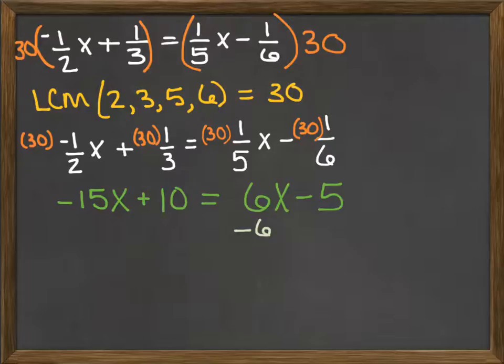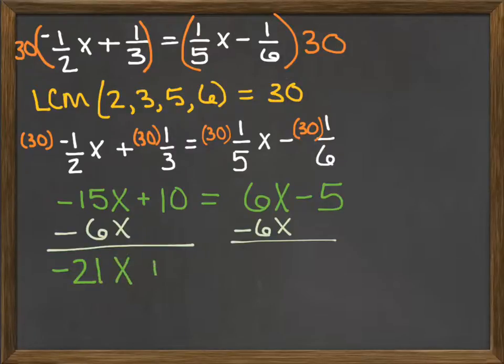So to do this, I'm going to subtract six x from both sides of the equation. This will result in negative twenty-one x plus ten equal to negative five.